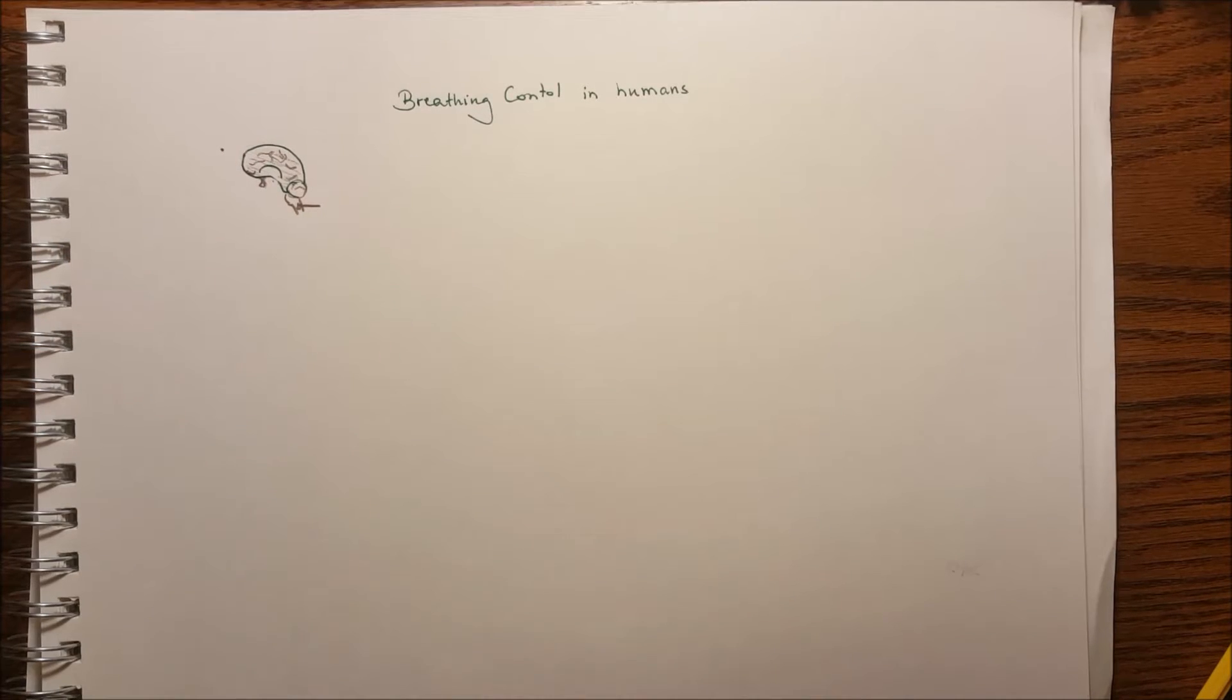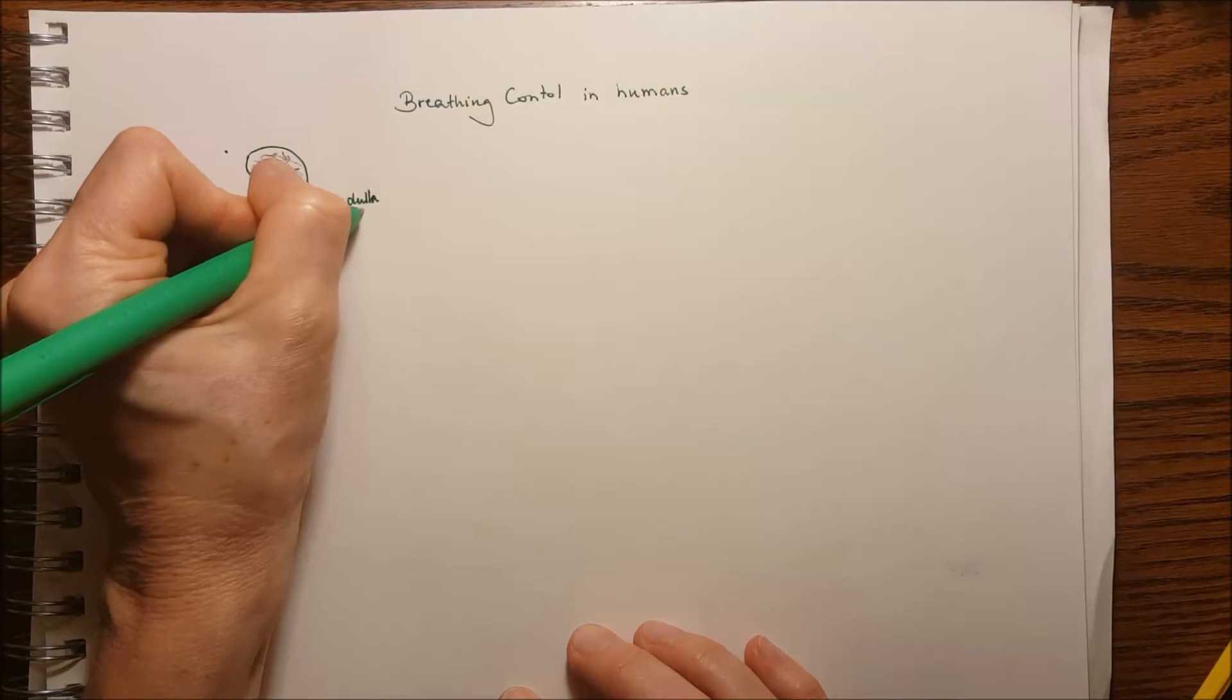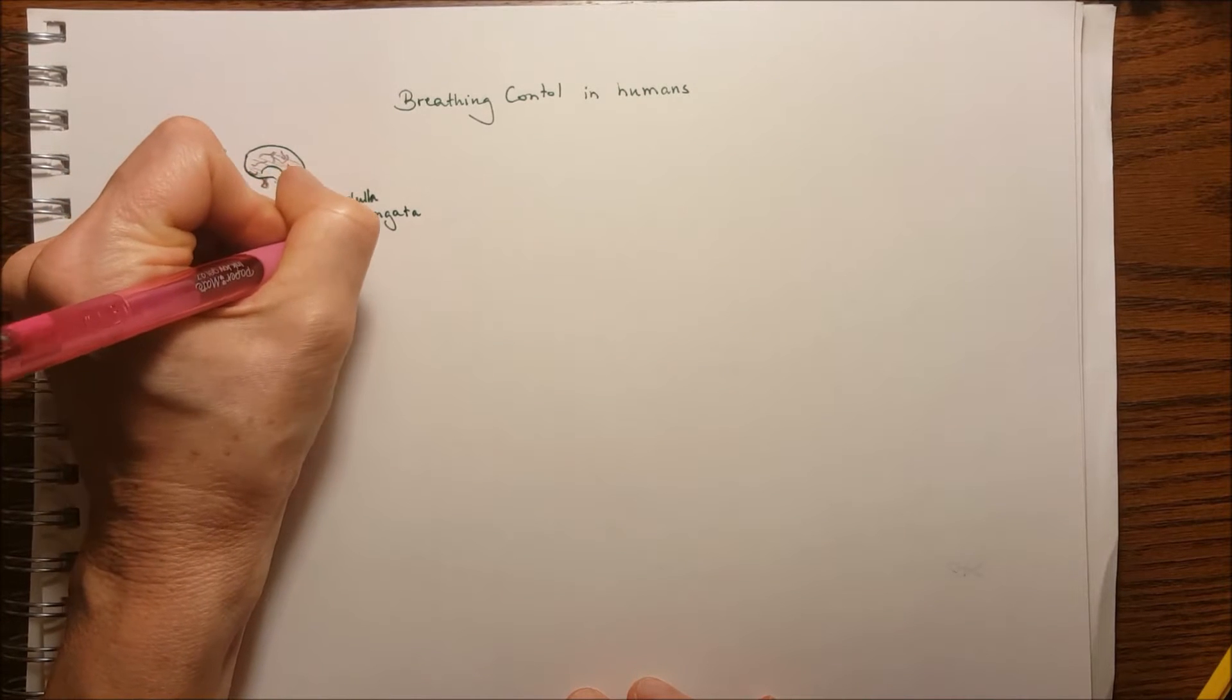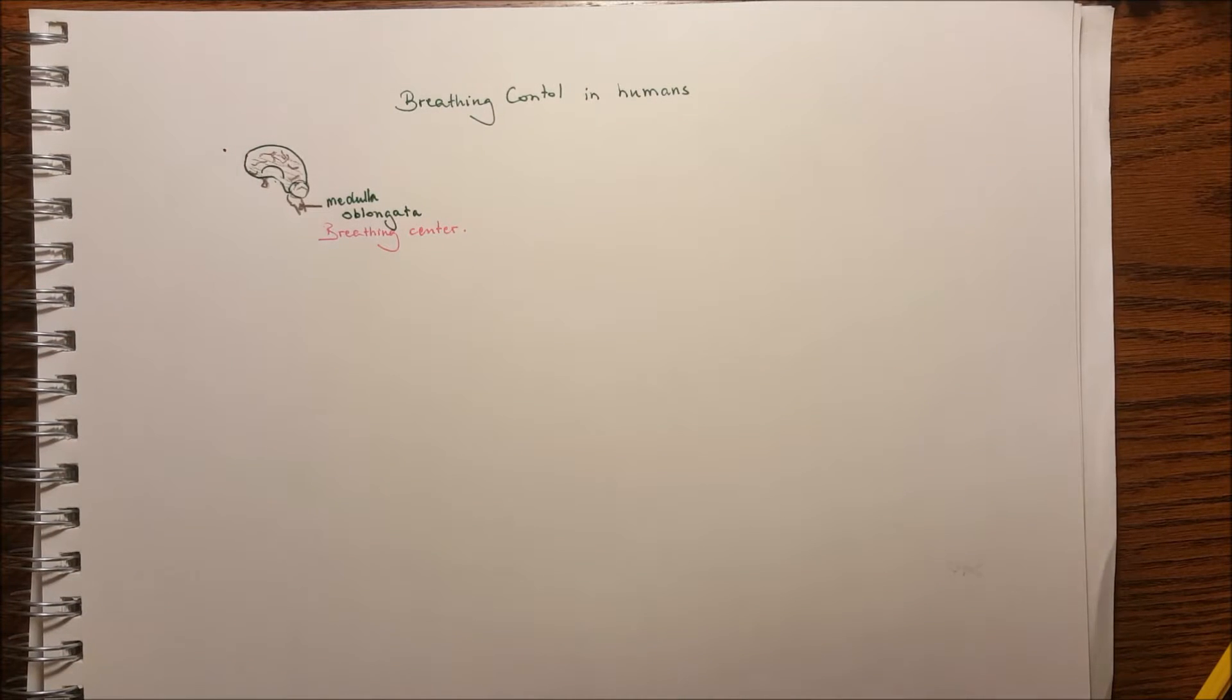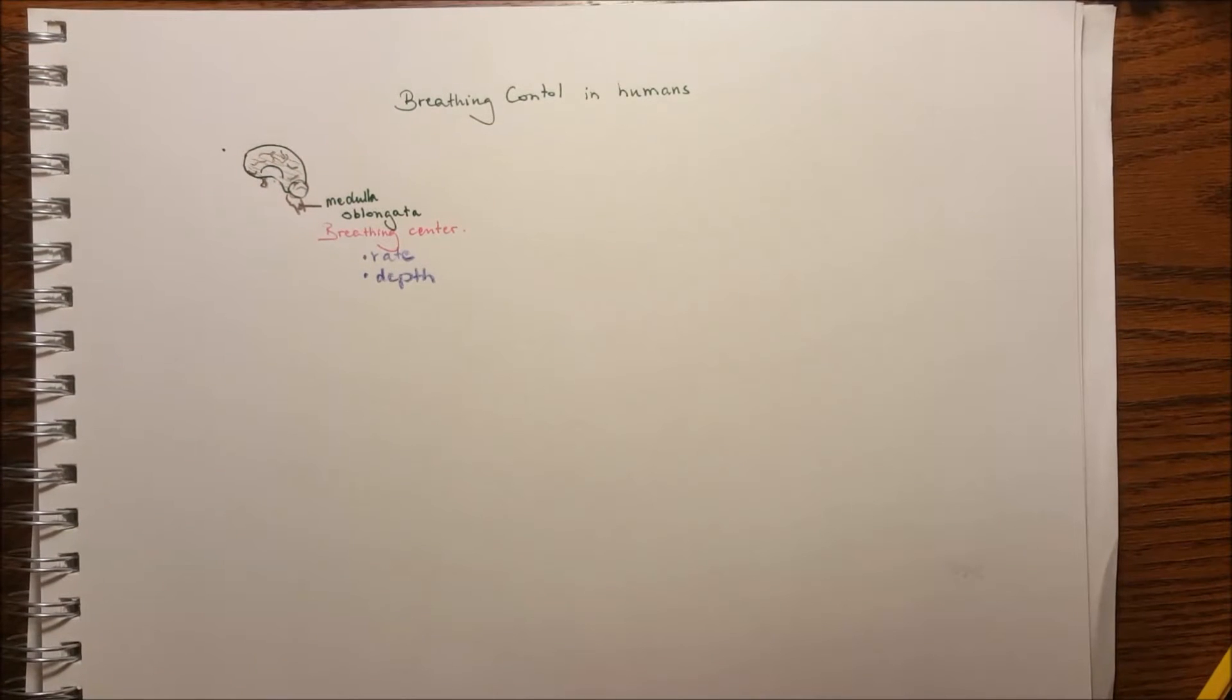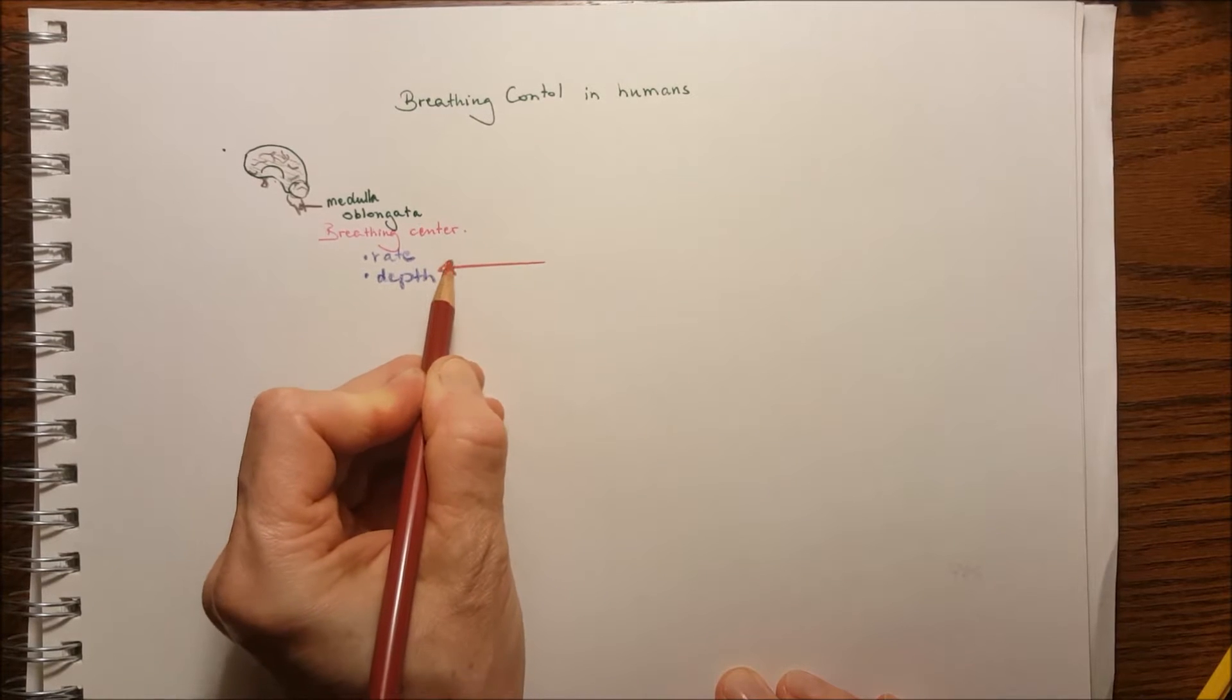After that is the medulla oblongata, that is really the breathing center for vertebrates. It is responsible for the rate of the breathing as well as the depth of the breathing. The rate and the depth is controlled by the pH change.